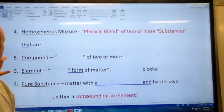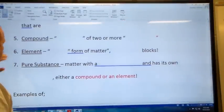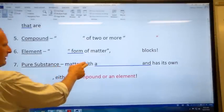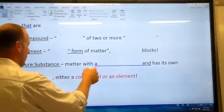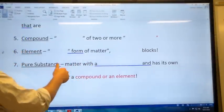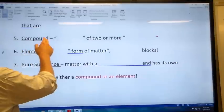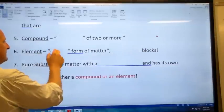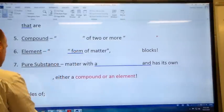And so then we move into a different category. Elements, compounds, or pure substance. A pure substance is matter of a fixed composition that has its own properties. It can either be a compound or an element. A compound is a chemical blend of two or more elements. An element is the simplest form of matter, the basic building blocks.